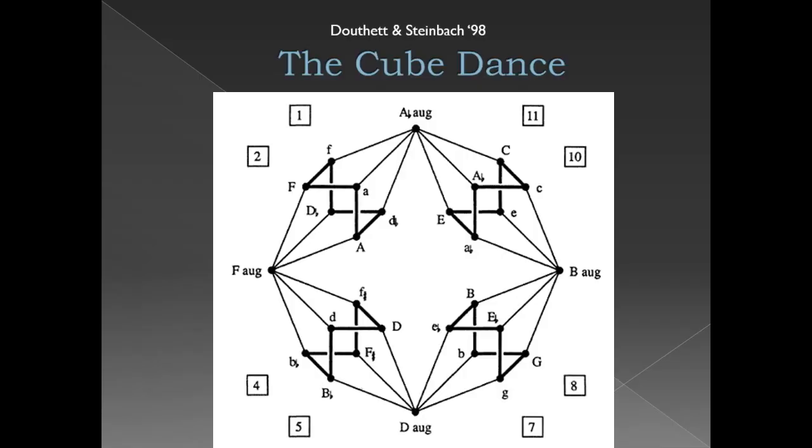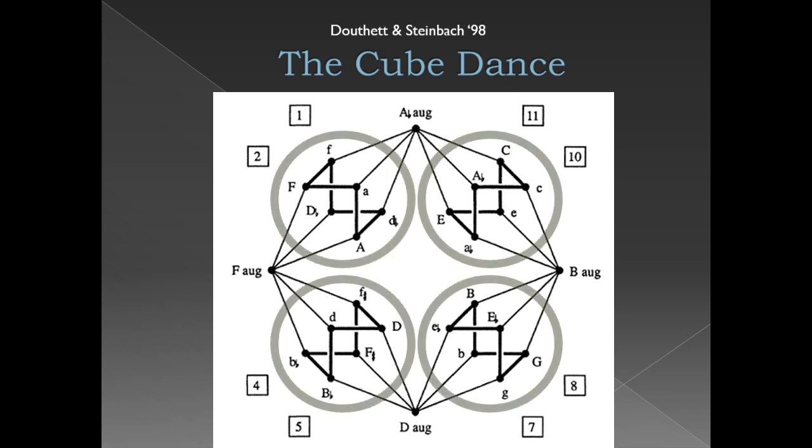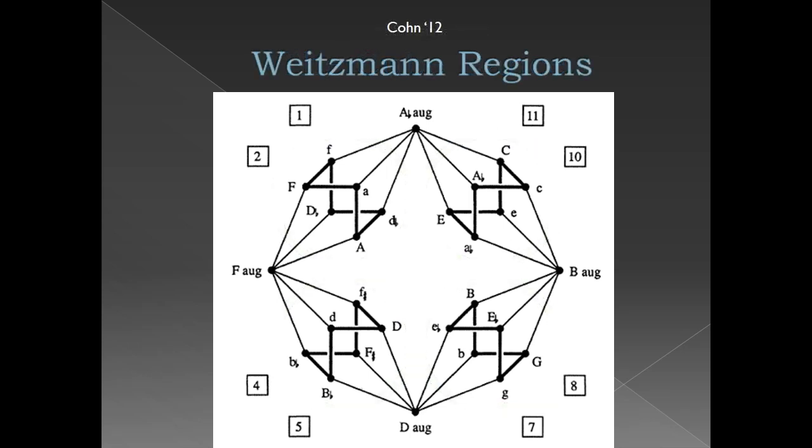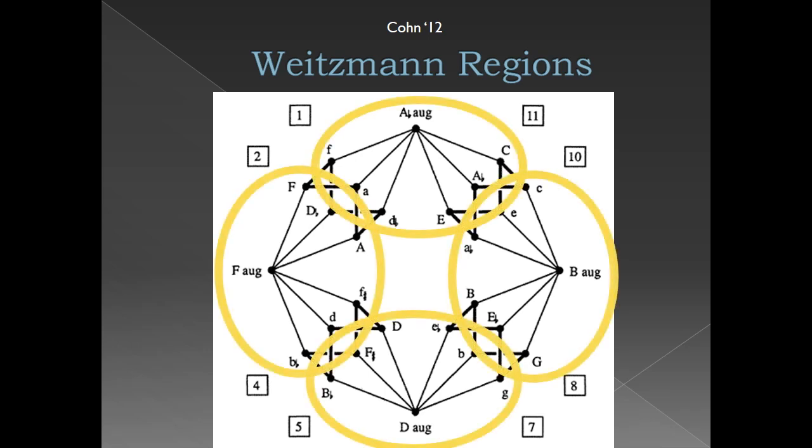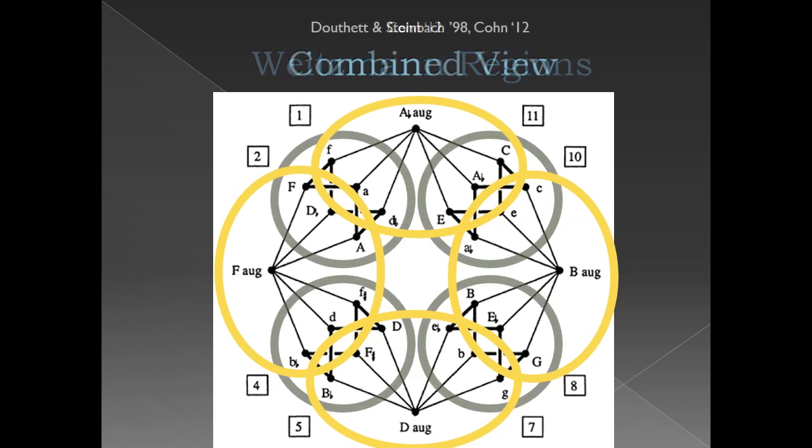In addition to the four hexatonic cycles shown here, we can also divide the cube dance into parts centering around the augmented triads. These divisions are known as Weitzmann regions. Together we can divide the cube dance into hexatonic cycles or Weitzmann regions, and both methods are useful for analysis.